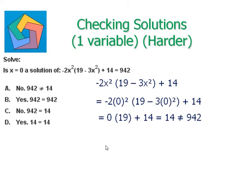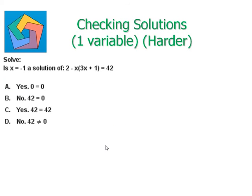However, the RHS of the given equation is 942, so our correct answer is option A: No, 942 is not equal to 14. That means x equals 0 does not solve the equation. Going on to the last example: is x equals negative 1 a solution of this equation?